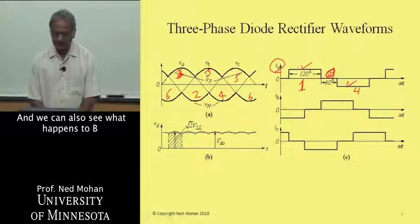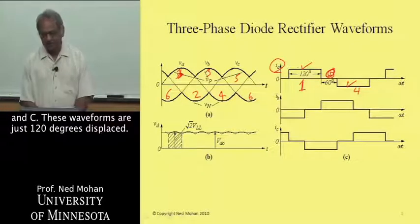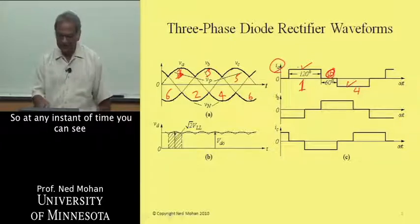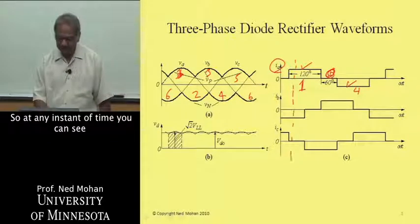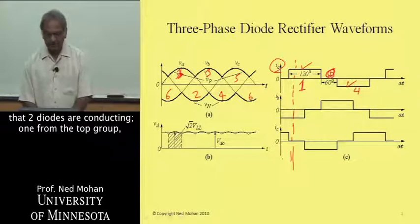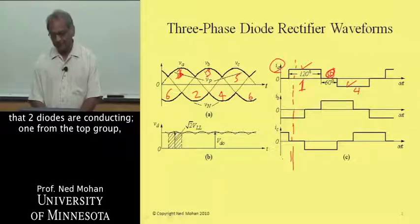We can also see what happens to B and C. These waveforms are just 120 degrees displaced. So at any instant of time, you can see that two diodes are conducting, one from the top group, one from the bottom group.